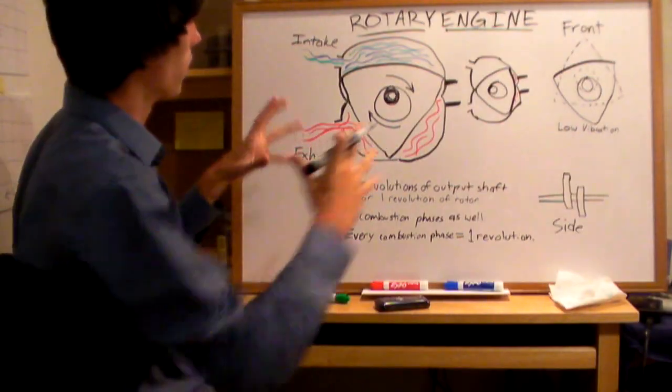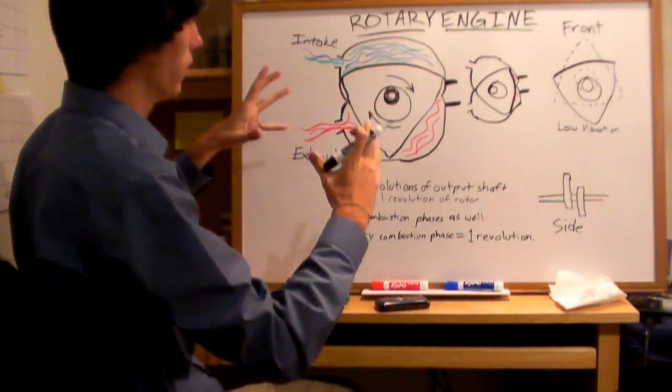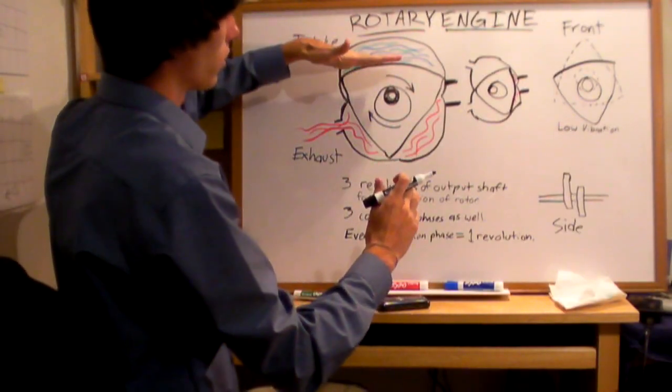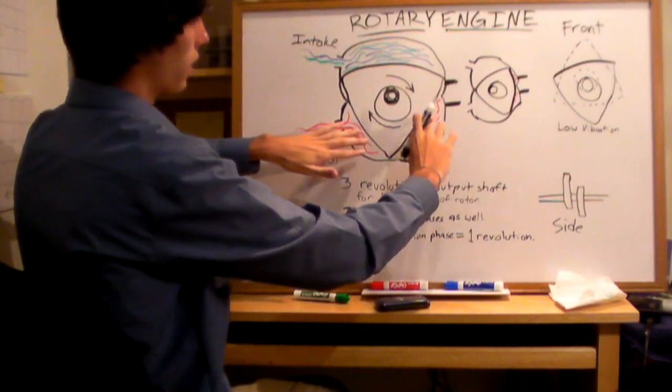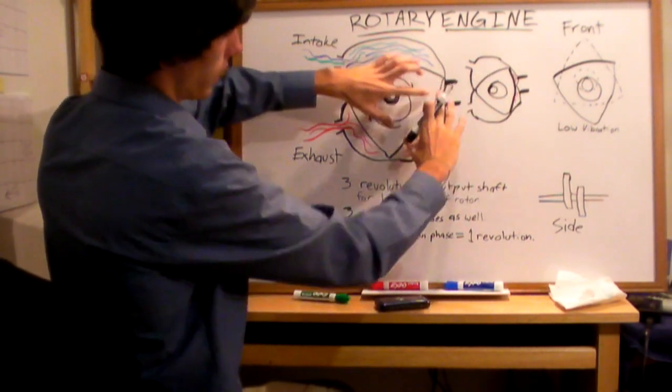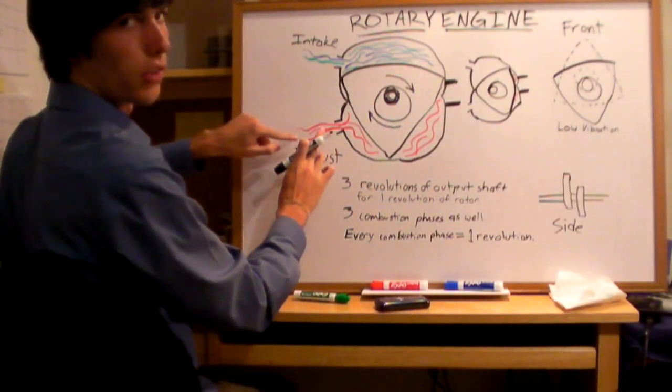All four steps of the combustion are happening simultaneously in the same chamber. At the top, you've got the air-fuel mixture going in. Here, you've got the combustion phase happening. Here, you've got the combustion occurring after the spark, and then pushing out the exhaust gases.